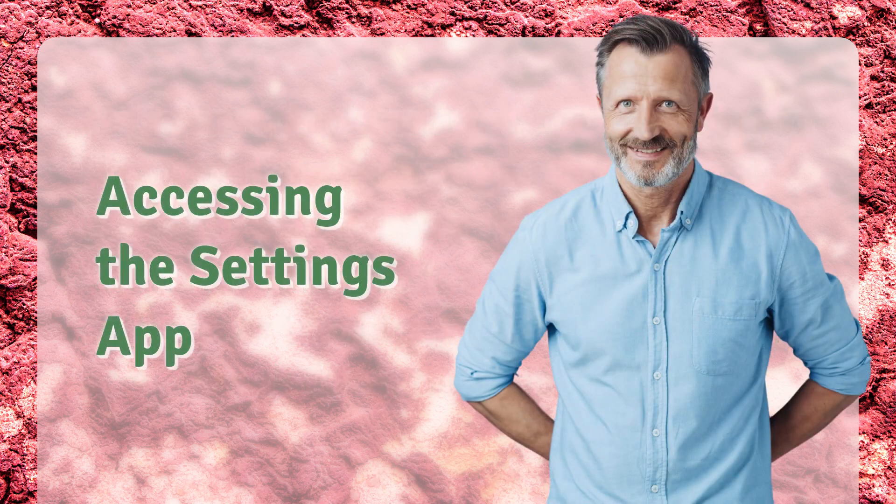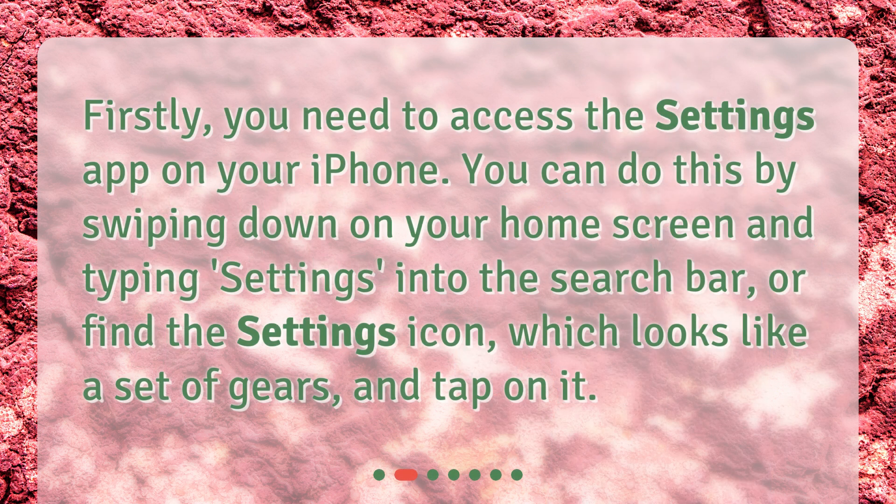Accessing the Settings app. Firstly, you need to access the Settings app on your iPhone. You can do this by swiping down on your home screen and typing Settings into the search bar, or find the Settings icon, which looks like a set of gears, and tap on it.